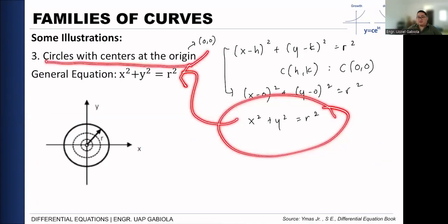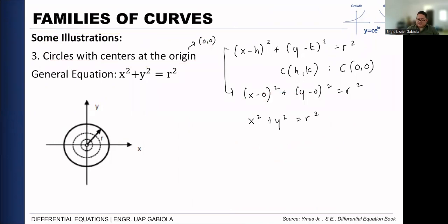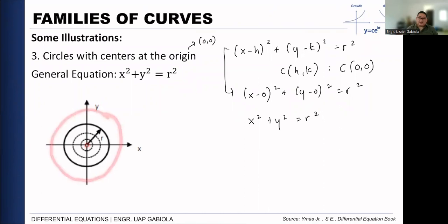Any circle, as long as its center is at the origin, is part of this family — whether it is very large or very small. That is why it is called families of curves, or in this case families of circles. You need to be familiar with the formulas for line, circle, parabola, ellipse, and hyperbola — the equations used in analytic geometry — to interpret the given conditions in these problems.